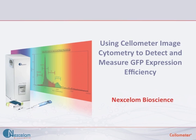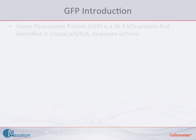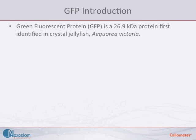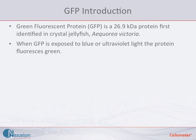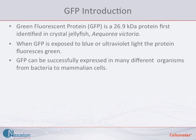GFP is a green fluorescent protein that is 26.9 kilodaltons in size. It was first identified in the crystal jellyfish Aequorea victoria, and when exposed to blue or ultraviolet light, the GFP protein fluoresces green. GFP was first expressed in a colony in 1994, and has since been successfully incorporated and expressed in a great variety of bacterial and mammalian organisms.